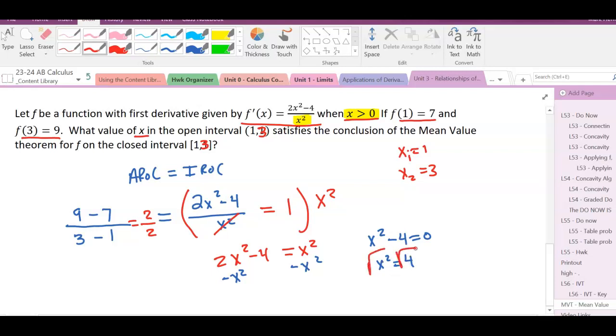I'll take the square root: x will equal plus and minus 2. But we're only looking on the closed interval from 1 to 3. 2 is right in the middle of there, but negative 2 is not, so we're only going to take 2 and we're going to say our answer is x equals 2.